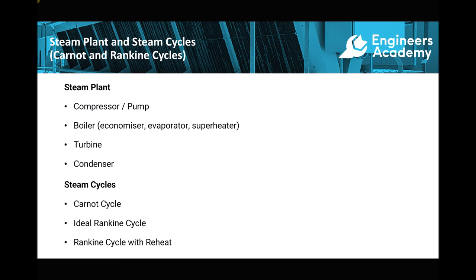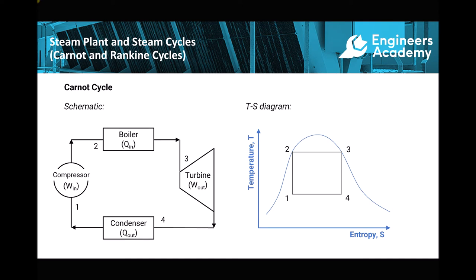Next we need to consider how we represent this steam power plant so that we can carry out various calculations. The first model used to represent steam plant is the Carnot cycle, and on the left hand side we have a schematic diagram of the Carnot cycle. Going from one to two we're passing through a compressor, because we have wet steam there.